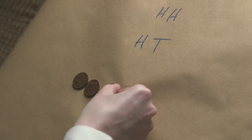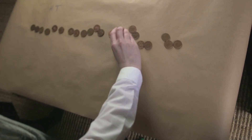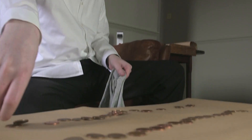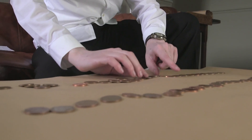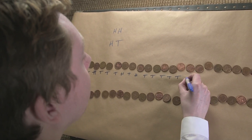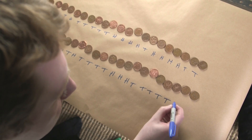The first coin is tails. Second coin is heads. Next coin is tails. I tried not to look at them, so it should be a sequence of random coin flips. I'll write them out so we can see what they are. Tail, head, tail, head, tail, head, tail, tail, tail, head, tail.